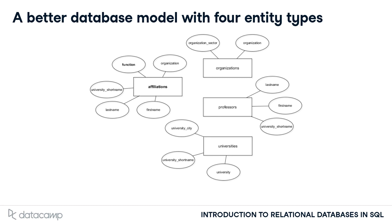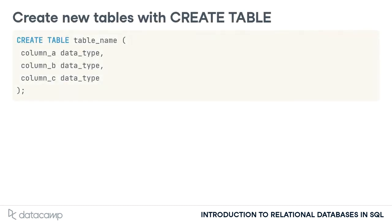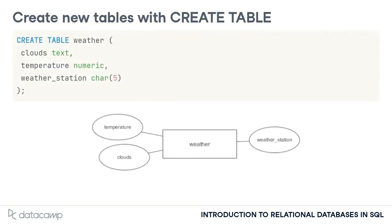The first thing you need to do now is to create four empty tables for professors, universities, organizations, and affiliations. This is quite easy with SQL. You'll use the CREATE TABLE command for that. At the minimum, this command requires a table name and one or more columns with the respective data types.